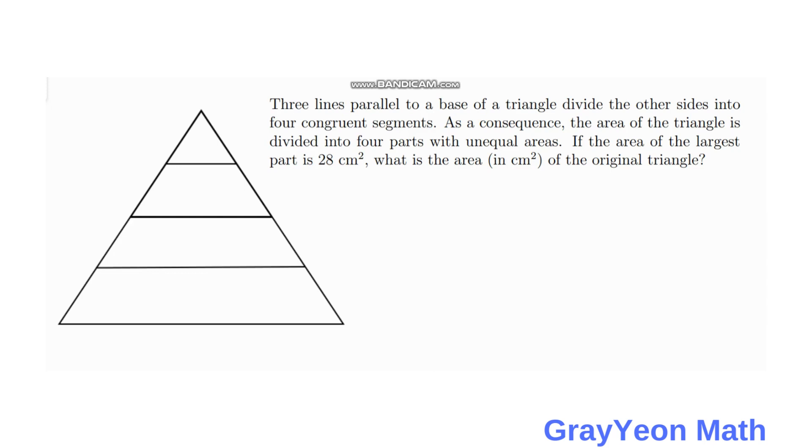Welcome to Gray-On-Math. The problem for this problem: three lines parallel to a base of a triangle divide the other sides into four congruent segments. As a consequence, the area of the triangle is divided into four parts with unequal areas. If the area of the largest part is 28 square centimeters, what is the area in square centimeters of the original triangle?